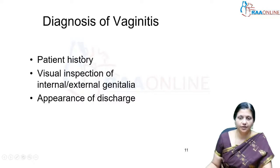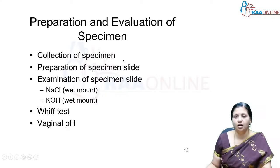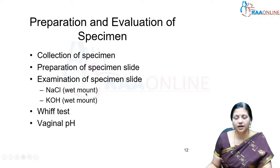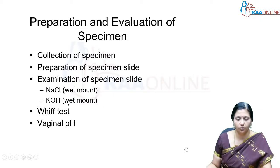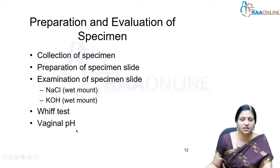To diagnose vaginal discharge, first take the patient history, perform a per-speculum examination, and look at the appearance of the discharge. To prepare the specimen, collect the vaginal discharge on a glass slide and add a drop of sodium chloride or a drop of KOH — this is called a wet mount in sodium chloride or wet mount in KOH. Another approach is to add KOH and smell it — this is called the Whiff test. The pH of the discharge can also be checked.